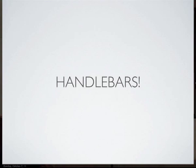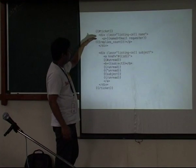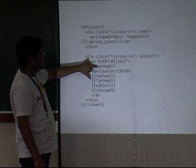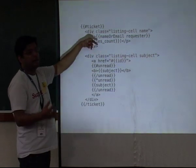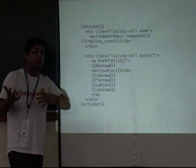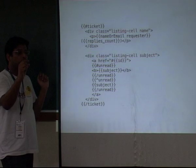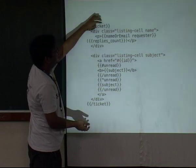We use Handlebars as our templating language, which is a superset of Mustache. The template is very logic-light — you can do simple HTML. If it's unread, bold it; if it's not unread, don't bold the subject. You can define helpers — from the requester object, extract a name or email. If you want to do anything complicated, you define helpers, but overall your template stays very simple. The TicketSummary view passes in a ticket object, and the template renders it as a ticket row.